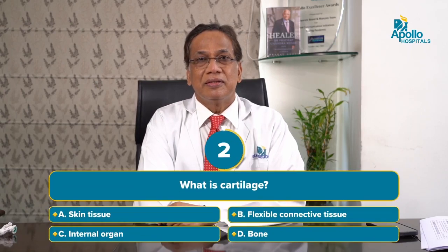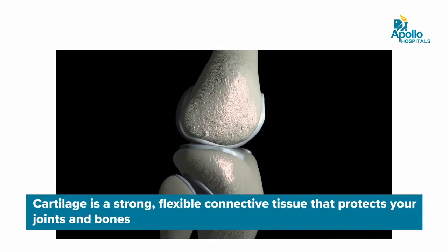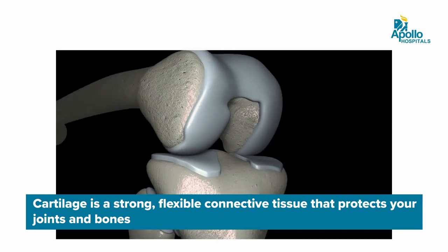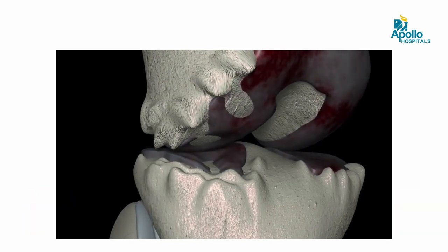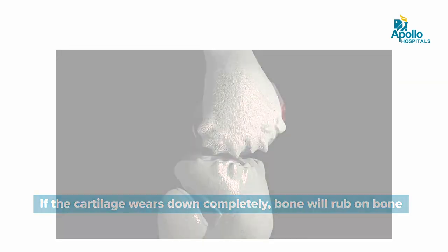What is cartilage? Cartilage is the most important part of the joint. It covers the end of the bone where it forms a joint with another bone. It is avascular — that means it does not have any blood supply and does not have any nerve supply. So any damage to the cartilage is not repairable.